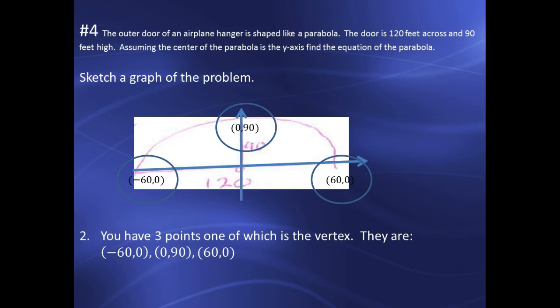I'm going to label my points. The problem said that the door was 90 feet high. Well, that means my vertex is at X equals zero, Y equals 90. It also said that it was 120 feet across. Well, if the Y axis is the middle, that means I have a point at 60 comma zero, and X equals negative 60, zero. So I have three points.